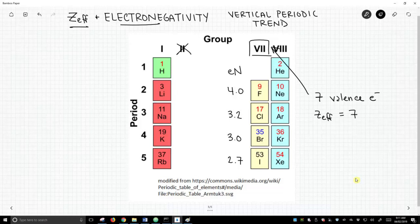So within this column of the periodic table, this group, the effective nuclear charge is constant, and yet electronegativity is dropping by quite a bit. So we need to bring in another factor to explain this change in electronegativity.